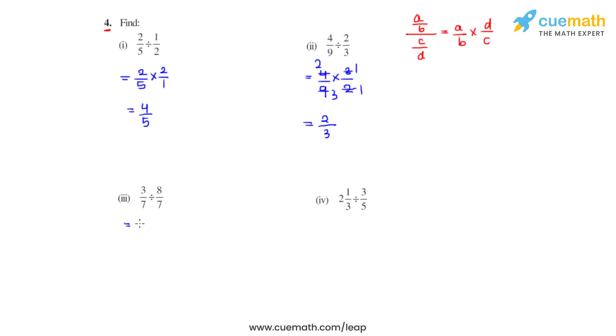Coming to the third bit, we have 3/7 divided by 8/7. So we put a multiplication sign and flip the other fraction, that gives us 7/8. 7 and 7 gets cancelled, and we get the final answer as 3/8.